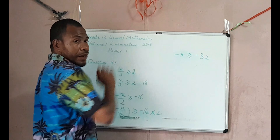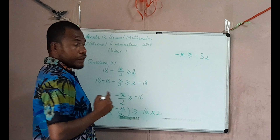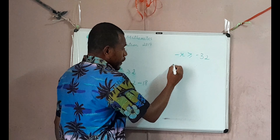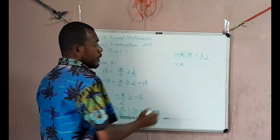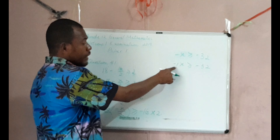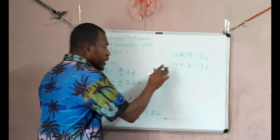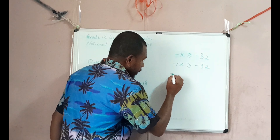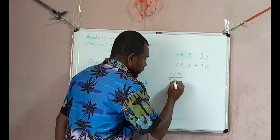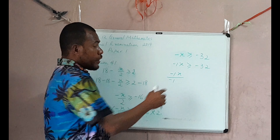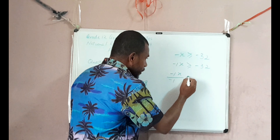We need to get rid of this negative sign. The coefficient of x is negative 1. We have negative 1x on the left hand side, which is greater than or equal to negative 32 on the right hand side. To solve for x, divide the left hand side by negative 1. According to the inequality rule, when you divide the inequality by a negative number, you reverse the sign. So we reverse this inequality sign.